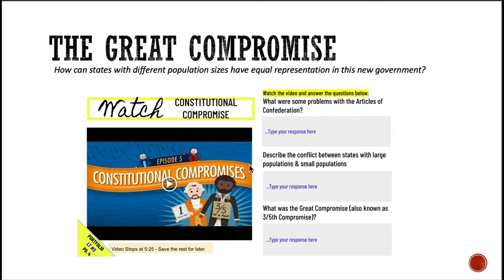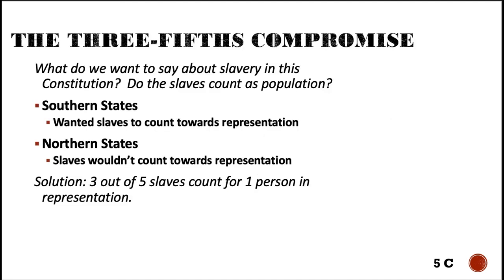Make sure you go back to the slide deck and watch this video — I suggest watching the whole thing. You should be able to answer: what were some problems with the Articles, and describe some conflicts between states with large populations and states with small populations. Most importantly, where we landed: what is the great compromise? Also known as the three-fifths compromise — it has since been amended, but you should still know what it is.